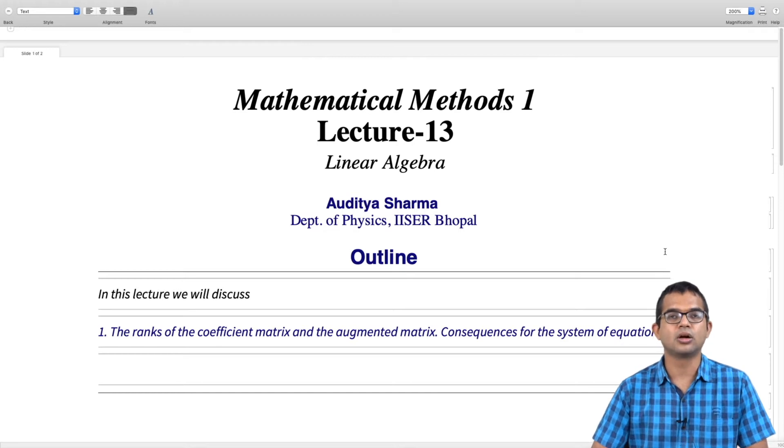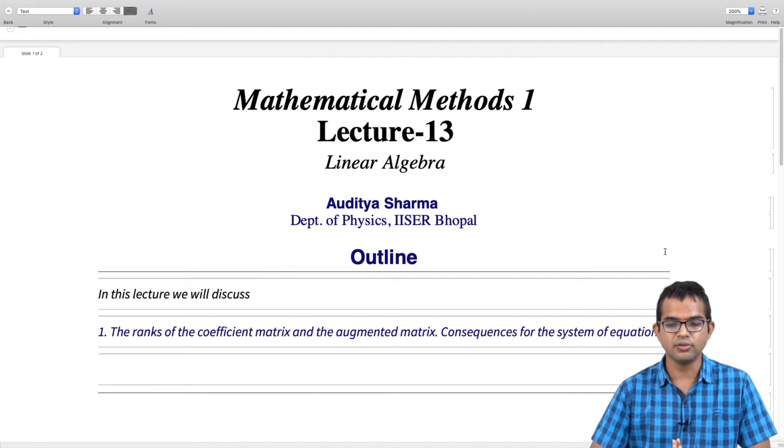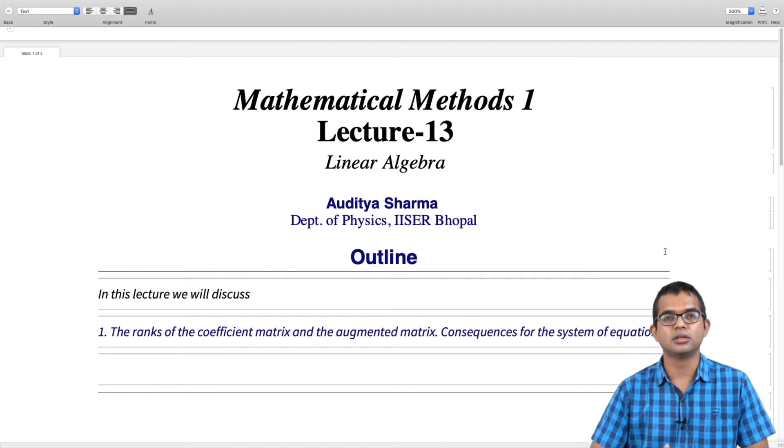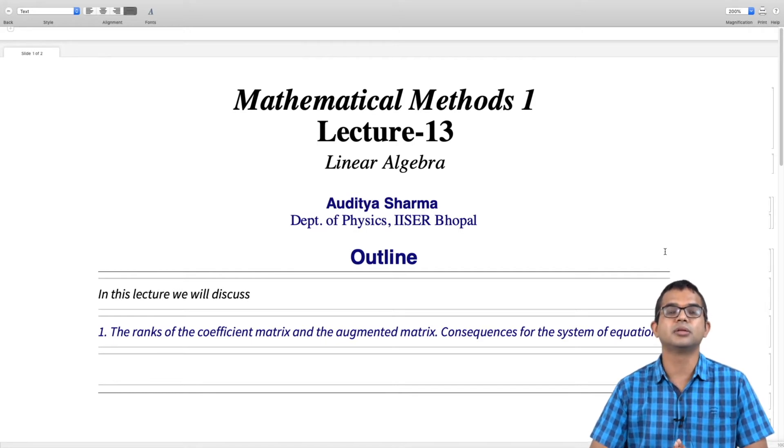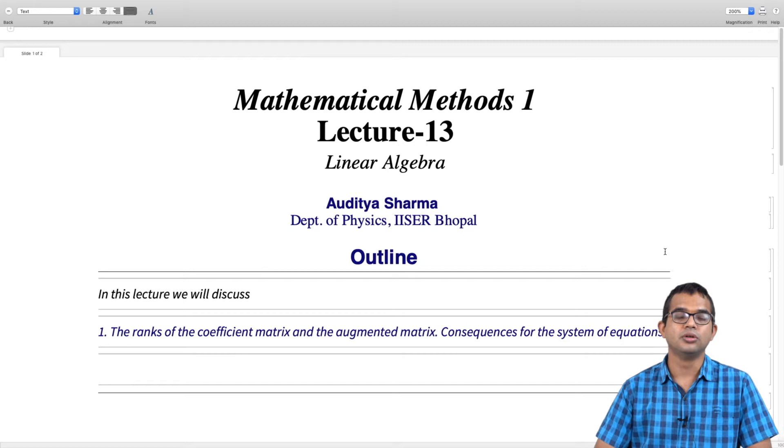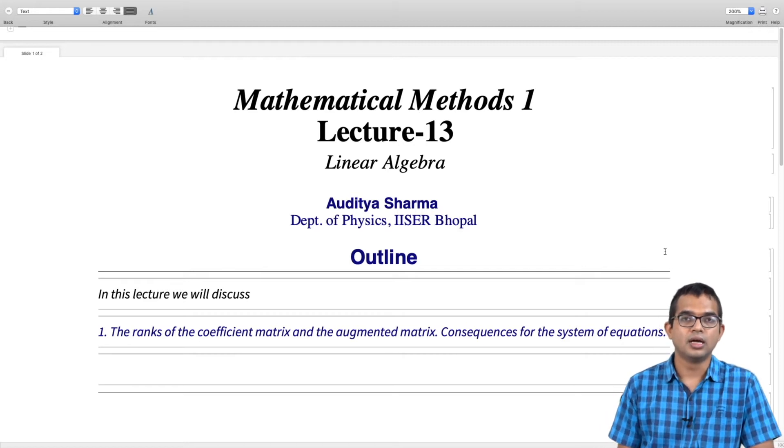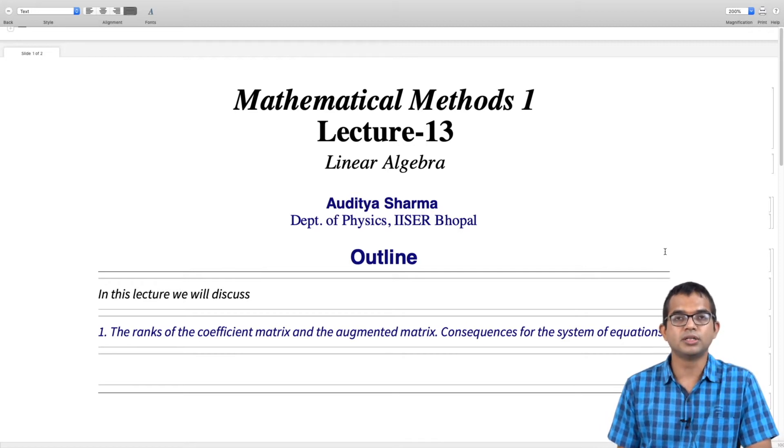And then we also looked at the concept of a rank of a matrix. And so here we will see that once we know the rank of a matrix, rank of two matrices corresponding to a set of equations, we are able to say whether this set of equations are consistent or if there is a unique solution, if there are lots of solutions. So these statements can be made directly from knowing the rank of the augmented matrix and the coefficient matrix.